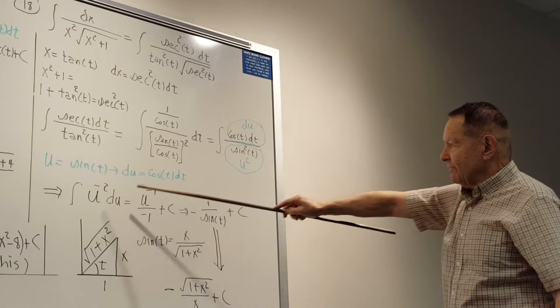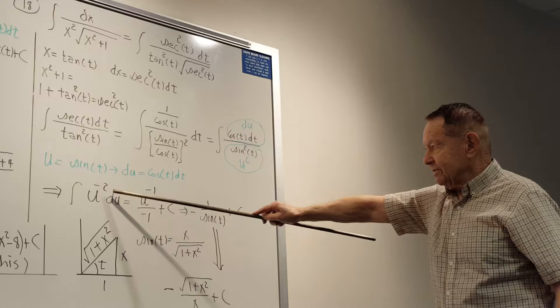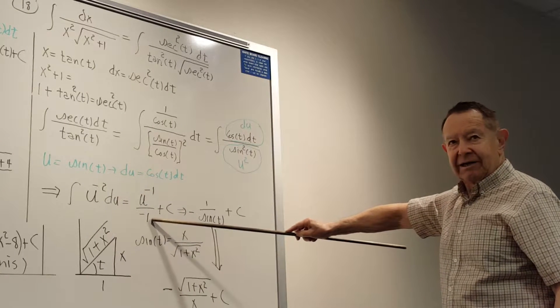And then you can rewrite that with the negative exponent and then just add one and divide by your new exponent.